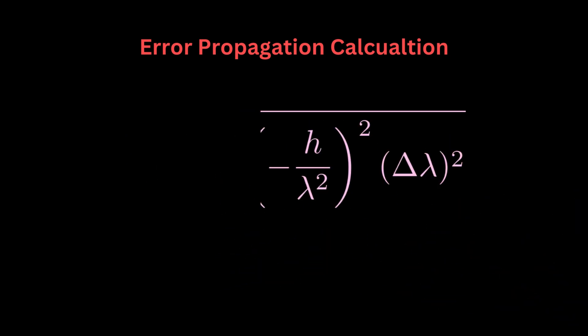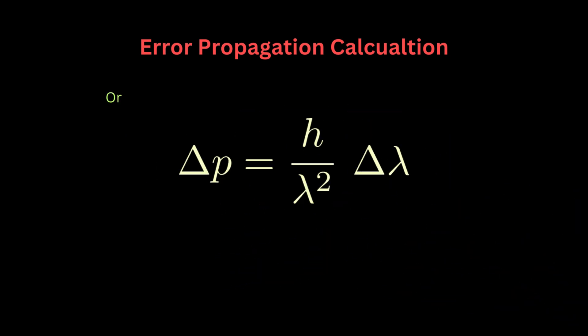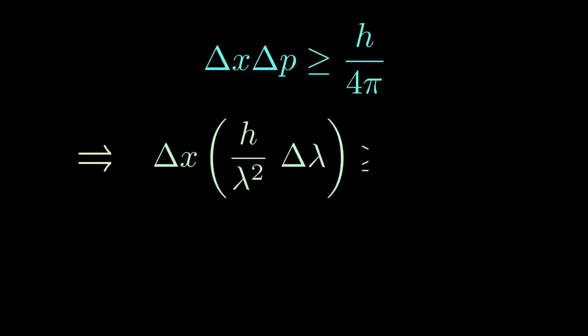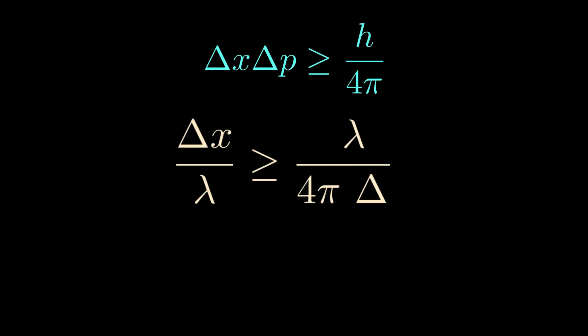It links the error in momentum in terms of both the wavelength and the error in measuring this wavelength. We substitute for delta p in the Heisenberg relation. To rapidly get to the point, let's take the minimal uncertainty limit, meaning we'll only consider the equal sign. Then, I'll drop this 4π. Finally we get this relation. And here we are.